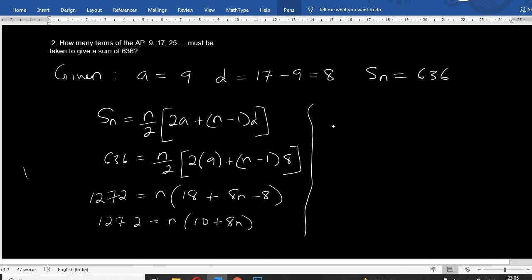1272 equals 10n plus 8n squared. We're going to play: 8n squared, 10n equals 1272. 1272 minus 8n squared minus 10n equals 0.